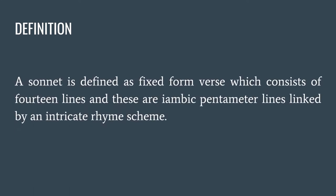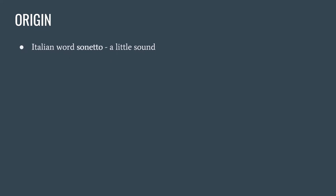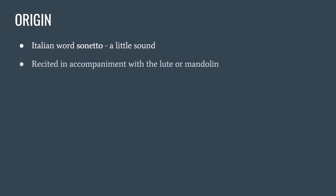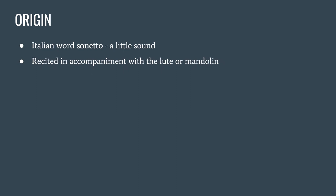A sonnet is defined as a fixed form of verse which consists of 14 lines in iambic pentameter, linked by an intricate rhyming scheme. The term sonnet is derived from the Italian word 'sonetto,' which means 'a little sound.' It is considered that the sonnet was a short poem recited in accompaniment with the lute or mandolin.